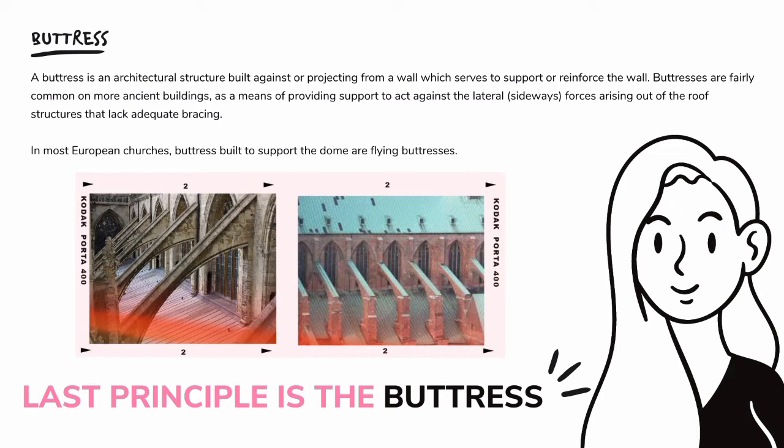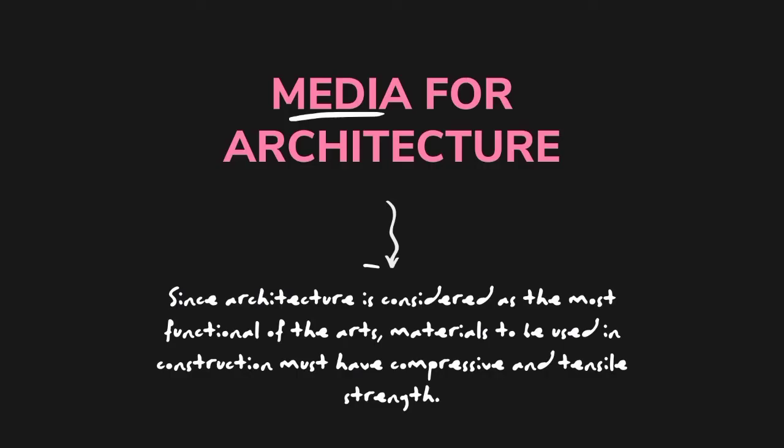A buttress is an architectural structure built against, or projecting from, a wall, which serves to support or reinforce it. Buttresses are fairly common on more ancient buildings as a means of providing support against the lateral, or sideways, forces arising from roof structures that lack adequate bracing. In most European churches, buttresses built to support the dome are known as flying buttresses.